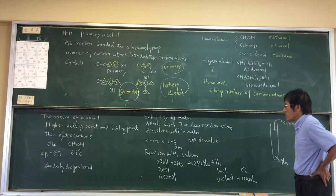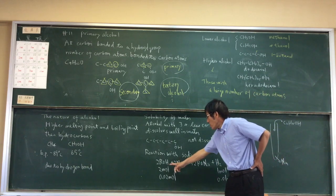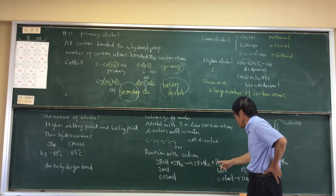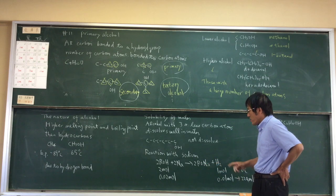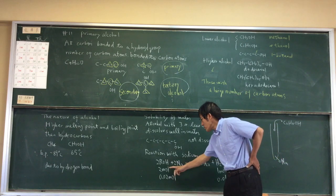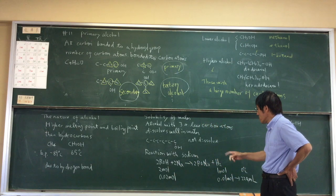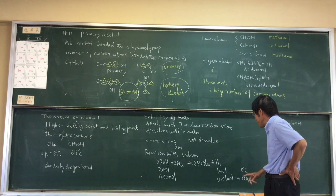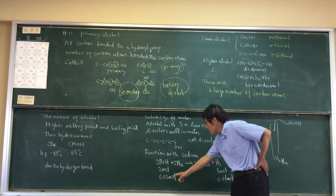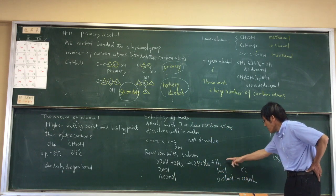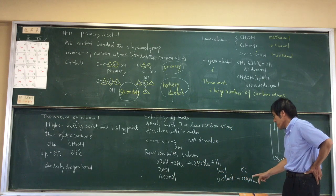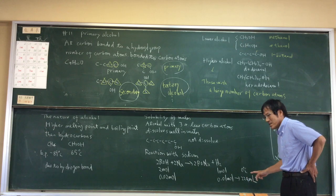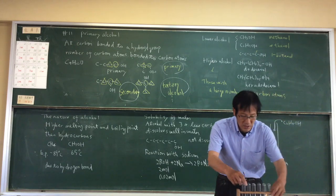Reaction with sodium: alcohol reacts with sodium to produce sodium alkoxide and hydrogen. When one molar of alcohol reacts with sodium, it produces one molar hydrogen. When 0.22 molar hydrogen is generated, that's 224 milliliters.